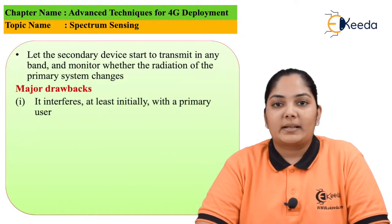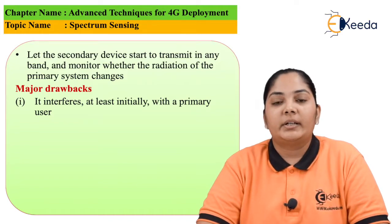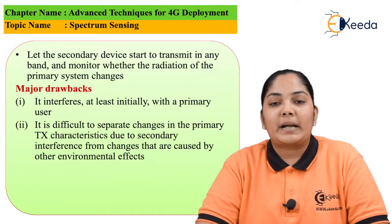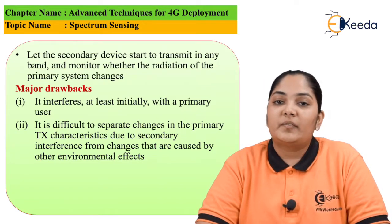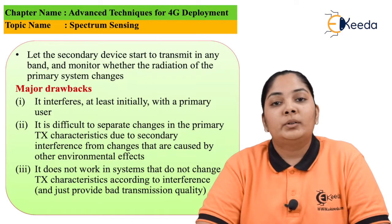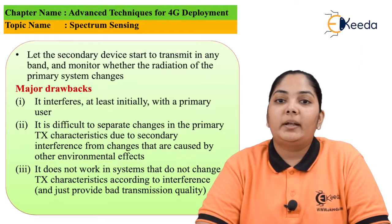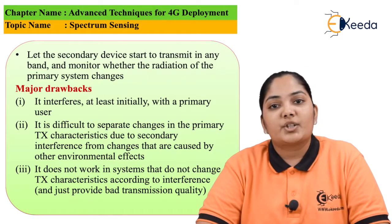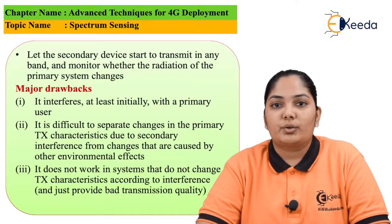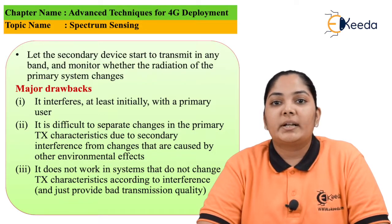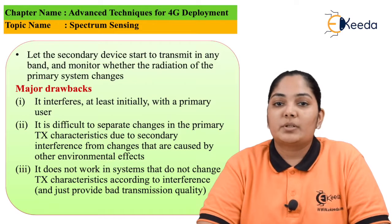But this solution has certain drawbacks. The first drawback is that we are directly interfering with the primary devices. The second drawback is that we are not able to separate the interference among the primary and secondary devices since information has also been transmitted by the secondary device. Finally, this system does not work with transmitters that are not changing depending on the characteristics of the channel — that is, if there is interference, the transmission should change to either increase the signal-to-noise ratio or maintain other modulation formats. If transmission is not changing depending on other interferences, this system is not of use.